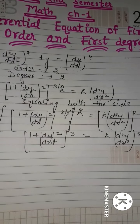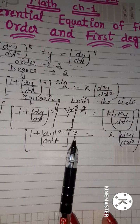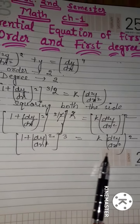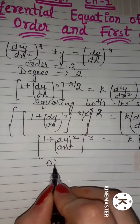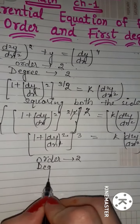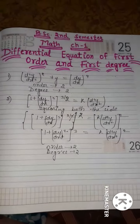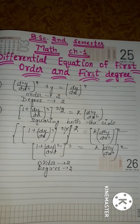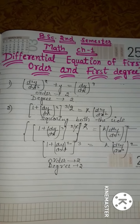अब degree और order निकालना easy है क्योंकि यह equation free from radicals and fractions हो गई है। Highest derivative है d²y/dx² — यही इसका order है, तो order = 2। और highest derivative की power 2 है, तो degree भी 2 है। मैंने यहाँ पर 2 questions से इस chapter की base concept बता दी — कि किसी differential equation का order और degree हम कैसे find करते हैं।